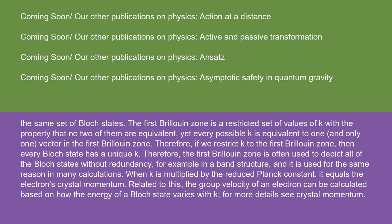The first Brillouin zone is a restricted set of values of k with the property that no two of them are equivalent, yet every possible k is equivalent to one, and only one, vector in the first Brillouin zone. Therefore, if we restrict k to the first Brillouin zone, then every Bloch state has a unique k.